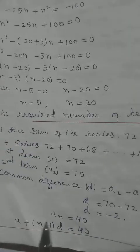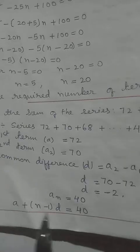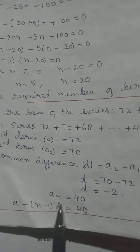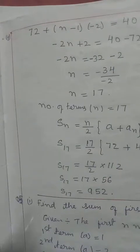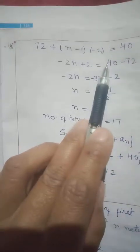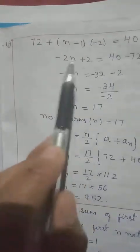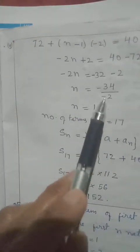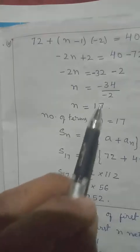Applying the formula A_N = A + (N−1)D = 40. A is 72, D is minus 2. Transferring terms: 72 plus (N−1)(−2) = 40, so (N−1)(−2) = 40 − 72 = −32, then minus-minus cancels giving 34 divided by 2, so N − 1 = 16, meaning N = 17 terms.